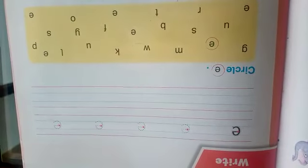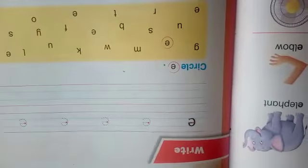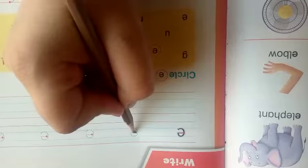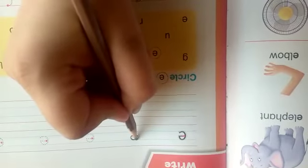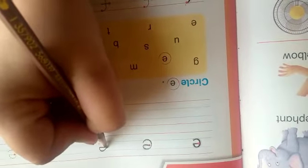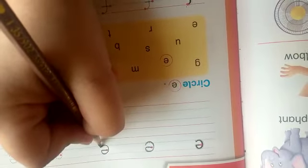Let's trace and write letter E. So trace letter E with me. Making a loop and continue to make a curve and stop. Put pencil on red dot. Making a loop. Continue to make a curve E.